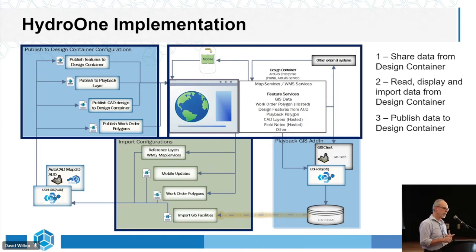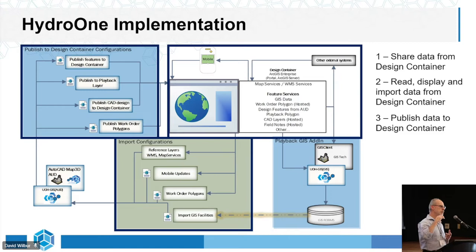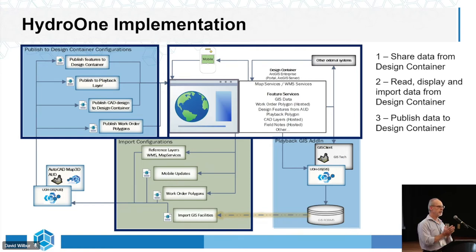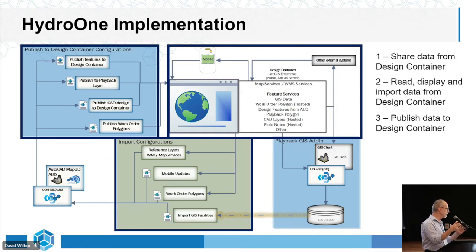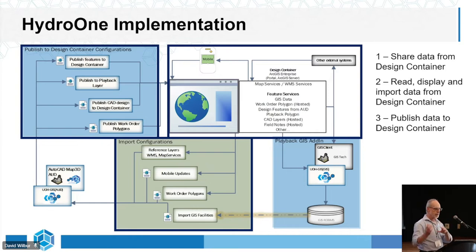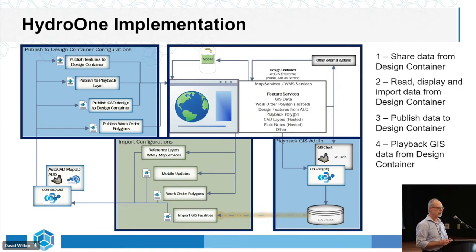With Hydro One, we're publishing twice when we push it out — once for playback, so playback will use it in GIS, and once as a feature service with all the individual features. That gets used by SAP work manager and shown in mobile so field crews can see individual features and assets. It's a system where data flows around between AUD, the design container, mobile, and back again.